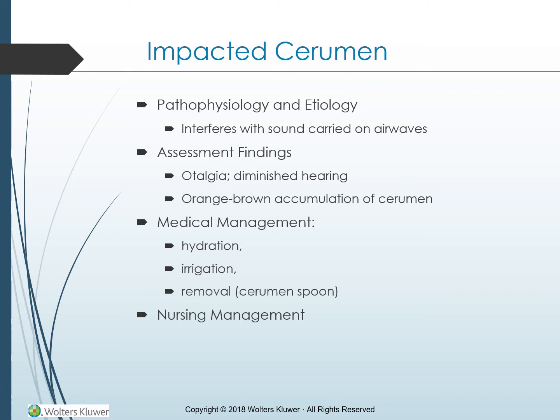Cerumen impaction interferes with sound carried on airwaves. Assessment findings include otalgia, diminished hearing, and an orange-brown accumulation of cerumen. Medical management includes hydration, irrigation, and removal using a cerumen spoon. Nursing management includes reporting any accumulation that cannot be removed, obtaining an order for irrigation, having the patient cleanse their ears daily with a warm washcloth, and teaching them not to use Q-tips or anything sharp in the ear canal.